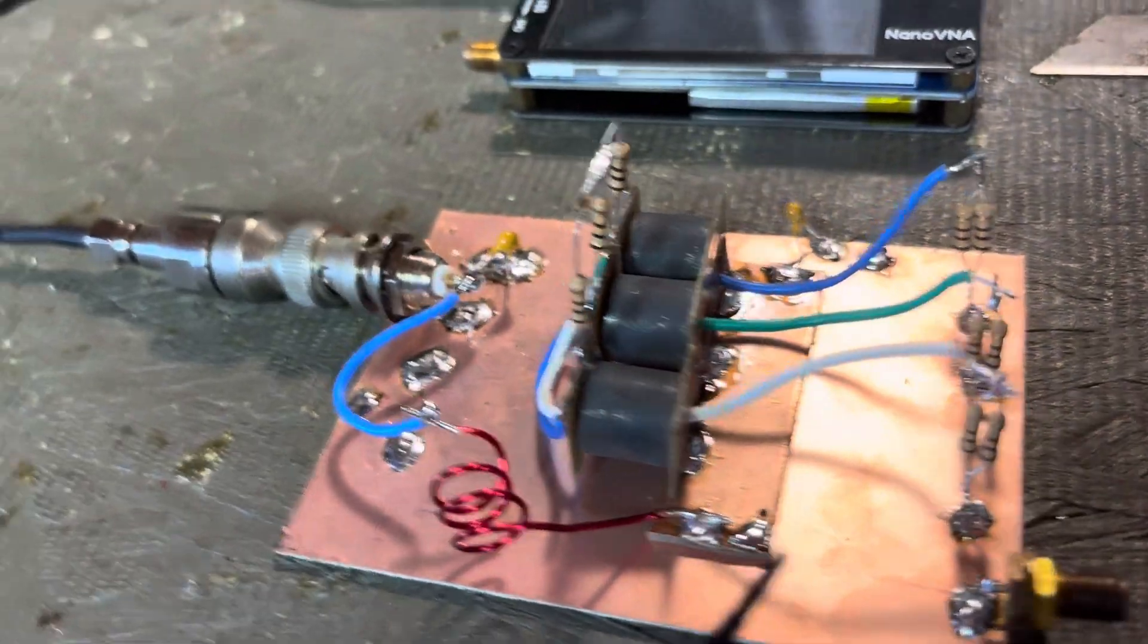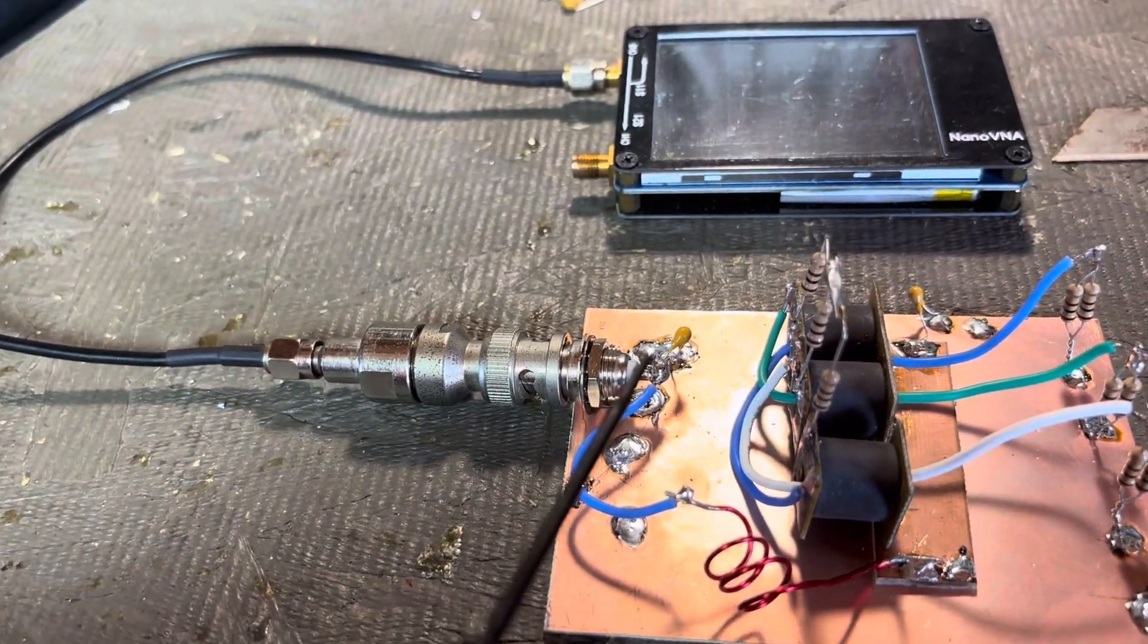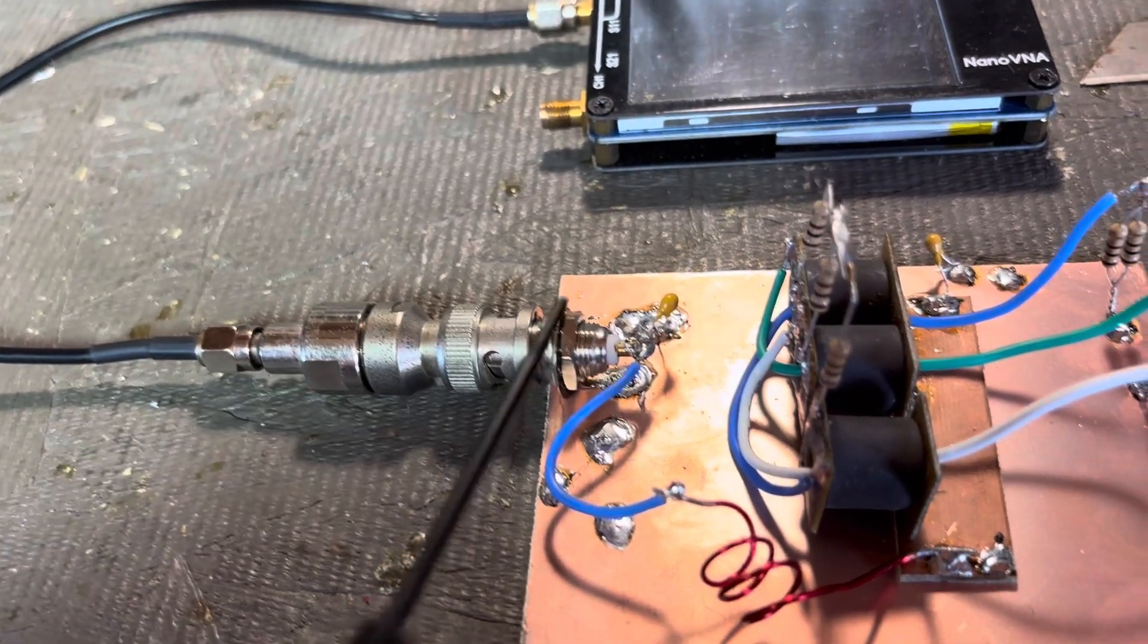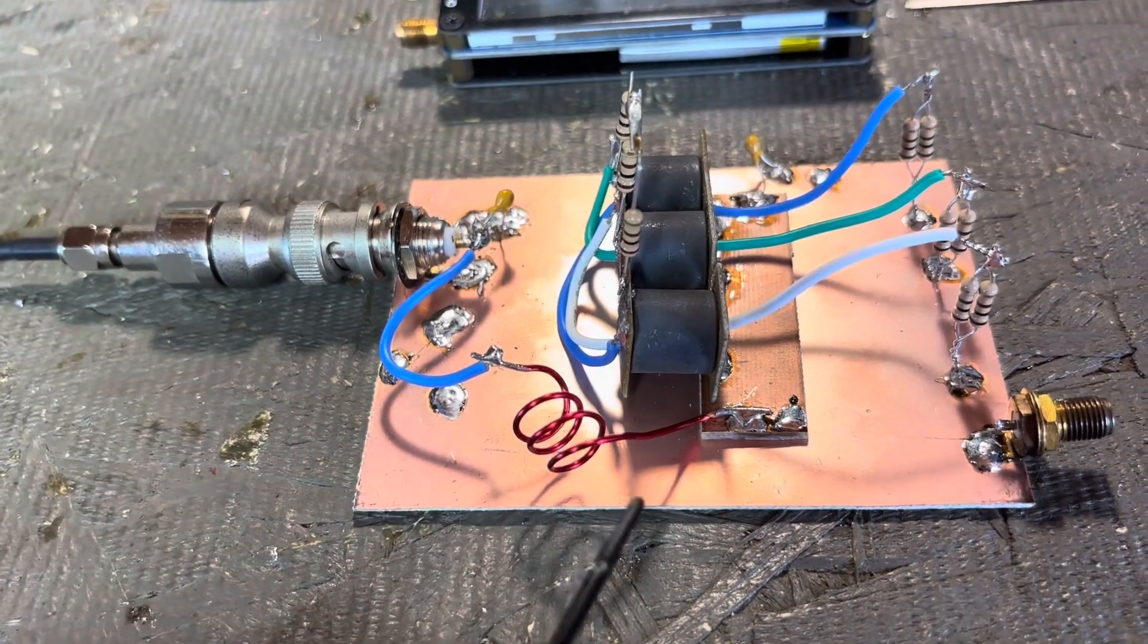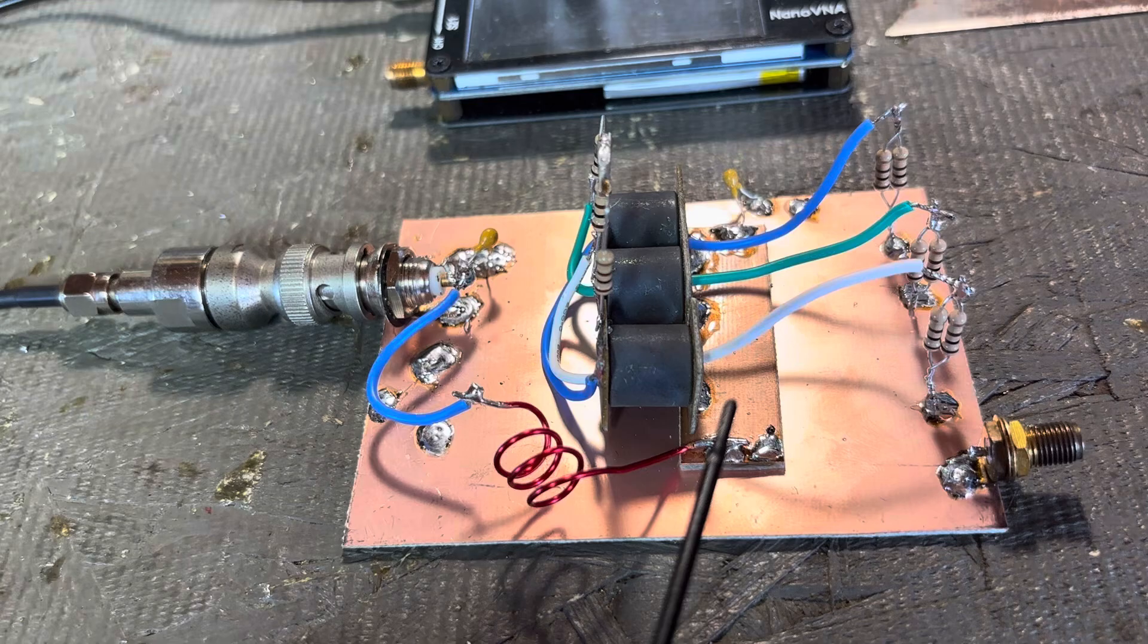So the path is the 50 ohm output into the, it hits the capacitor to ground, and then it hits the inductor that feeds into the 16 ohms here.